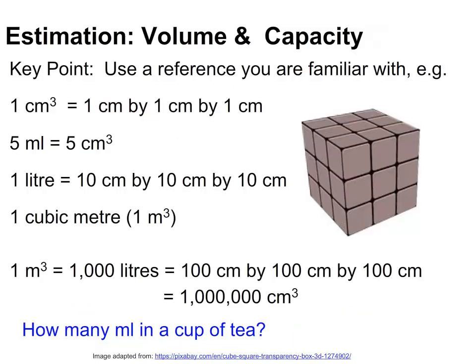In estimating volumes, think of a drop from an eyedropper being about 1 mil, and a teaspoon holding about 5 mil, or 5 cubic centimetres. Imagine a cube, 10cm by 10cm by 10cm. Such a cube has a volume of 1000 cubic centimetres, or 1 litre.